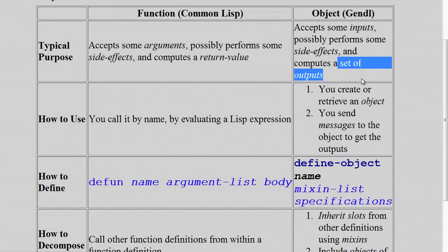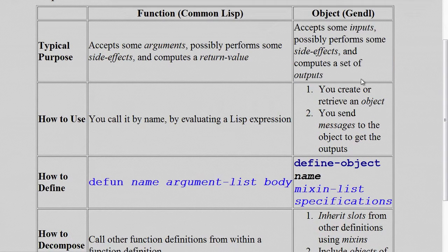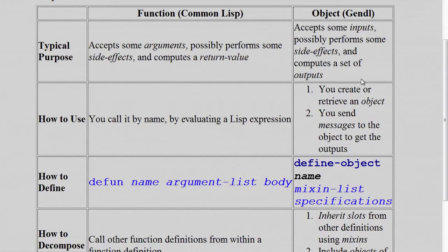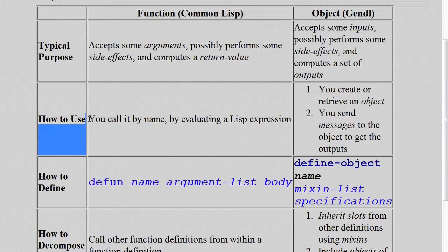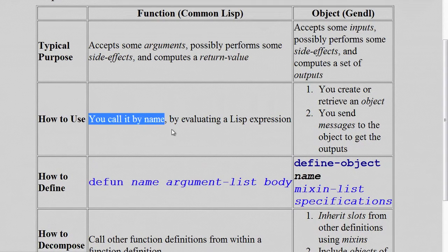Typically a function returns a single return value. An object can return one or more outputs, or can produce one or more outputs. Another bigger difference is a Lisp function, you just simply call it by name. It's a one-step process.